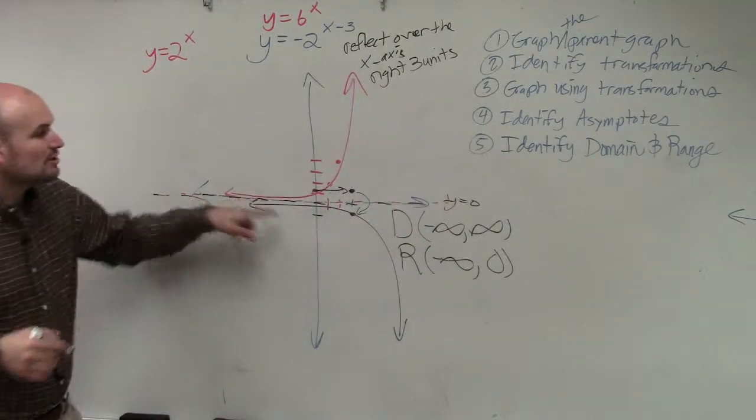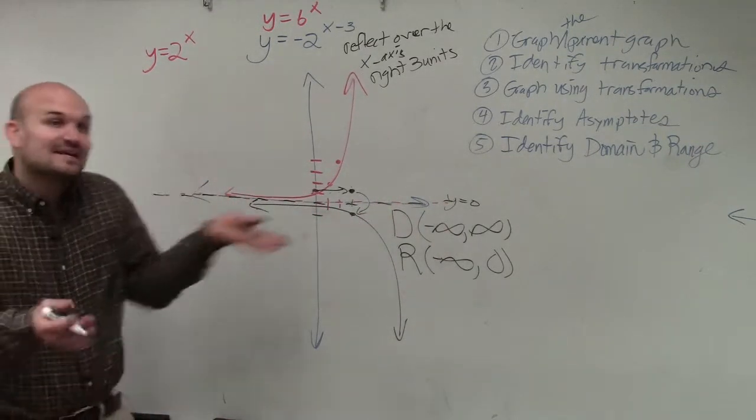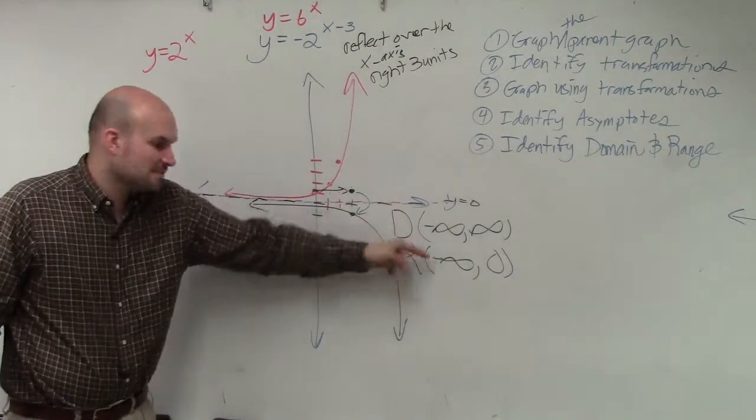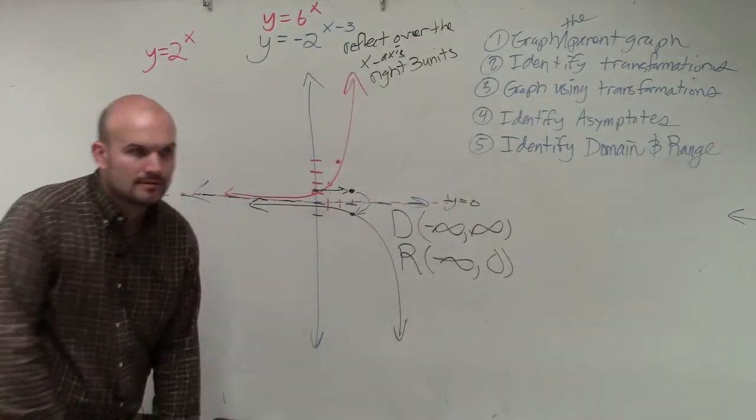So it's approaching that. It's going to get very, very close to it, but it's never going to cross it or go past it. Therefore, your range is from negative infinity down to zero.